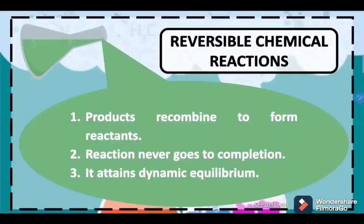We have three characteristics in order for us to identify or classify chemical reactions which are reversible. Number one: products recombine to form reactants. Like what I've said earlier, when two reactants combine and yield that product, that product will break down again to create its original reactants.